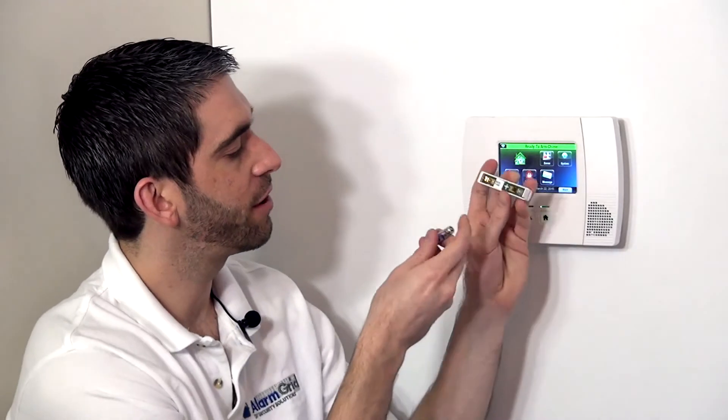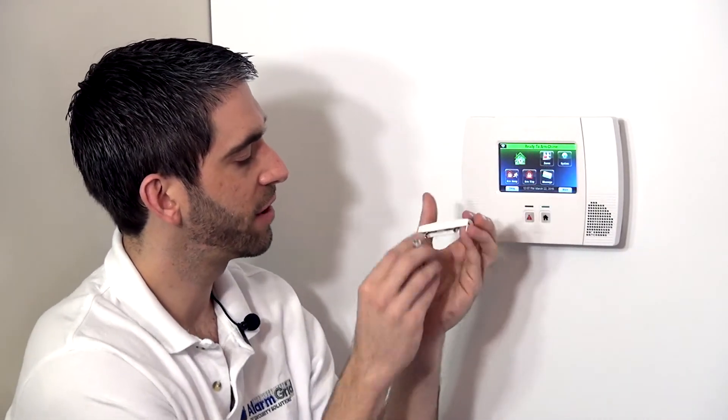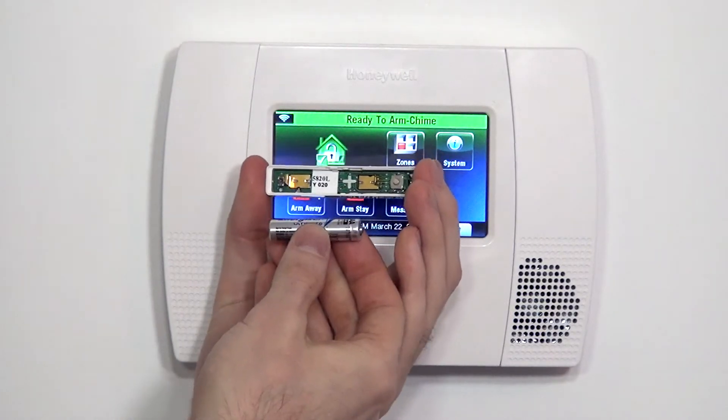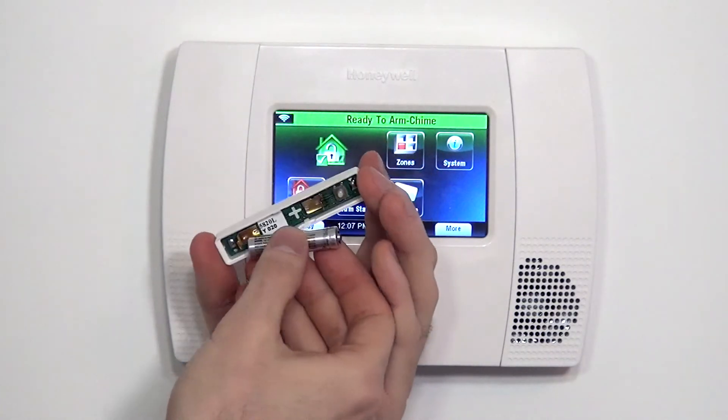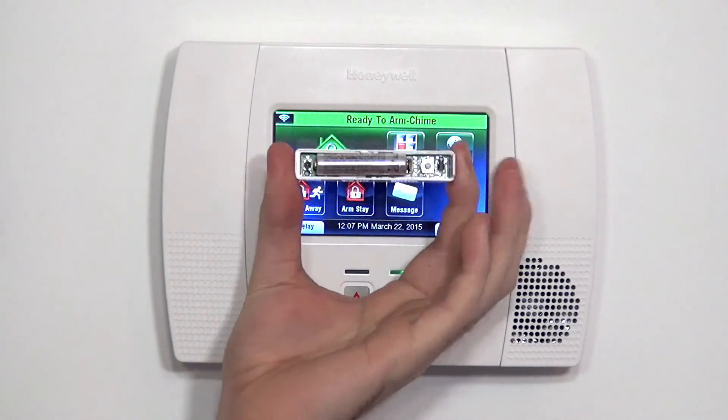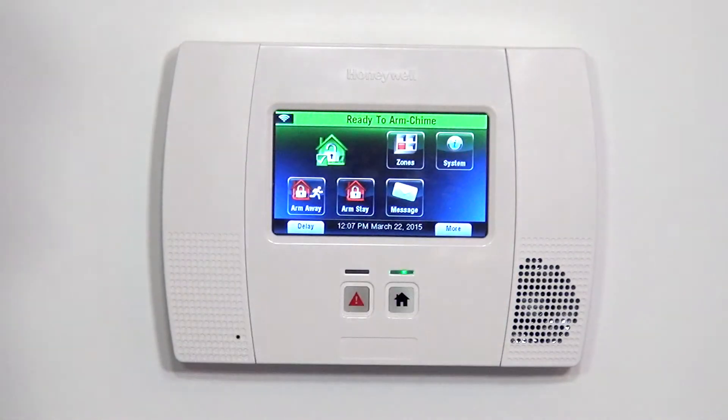To give it power, we need to insert our battery. On the circuit board, there's a big plus imprinted to show you which side is the positive contact. Insert your battery, negative to negative, positive to positive, and we now have power for our 5820L.